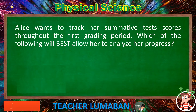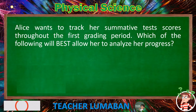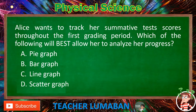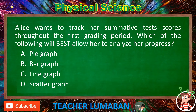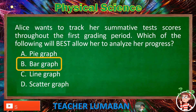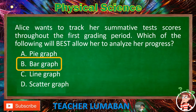Alice wants to track her summative test scores throughout the first grading period. Which of the following will best allow her to analyze her progress? Letter A: Pie graph. Letter B: Bar graph. Letter C: Line graph. Letter D: Scatter graph. The correct answer is letter B, bar graph. The bar graph is the best to allow her to analyze her progress.